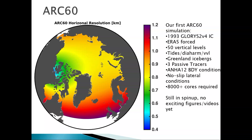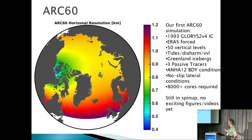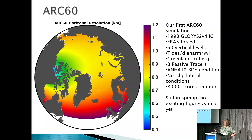Given the very interesting 1/60th results, we've decided to set up a 1/60th entire Arctic configuration, though it's going to be very expensive numerically. It's currently in spin-up — eight to ten thousand cores running on various Compute Canada supercomputers — and I expect it will take three to four years to run 20-odd years of simulation. Hopefully, this resolution will help us understand many of the processes in the Beaufort Gyre and the Canadian Arctic.